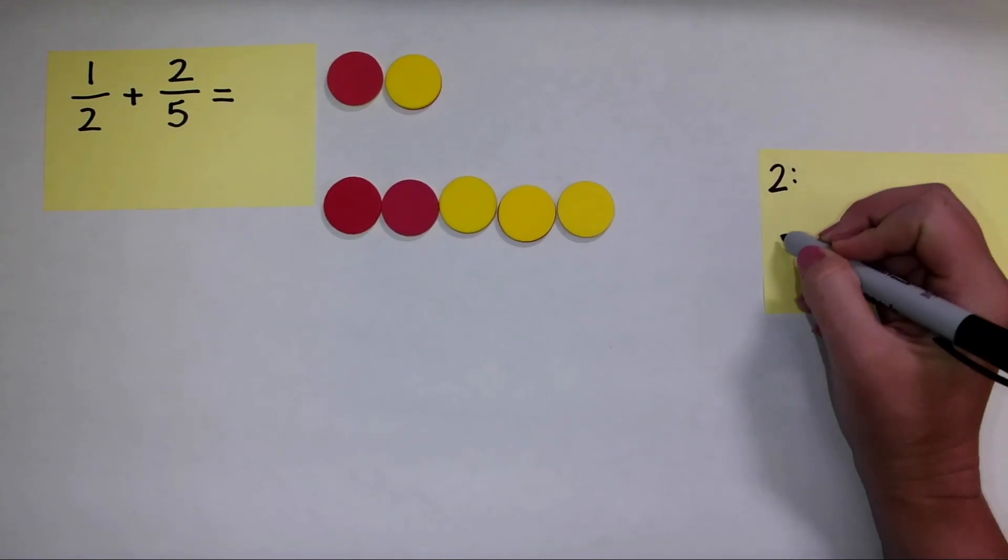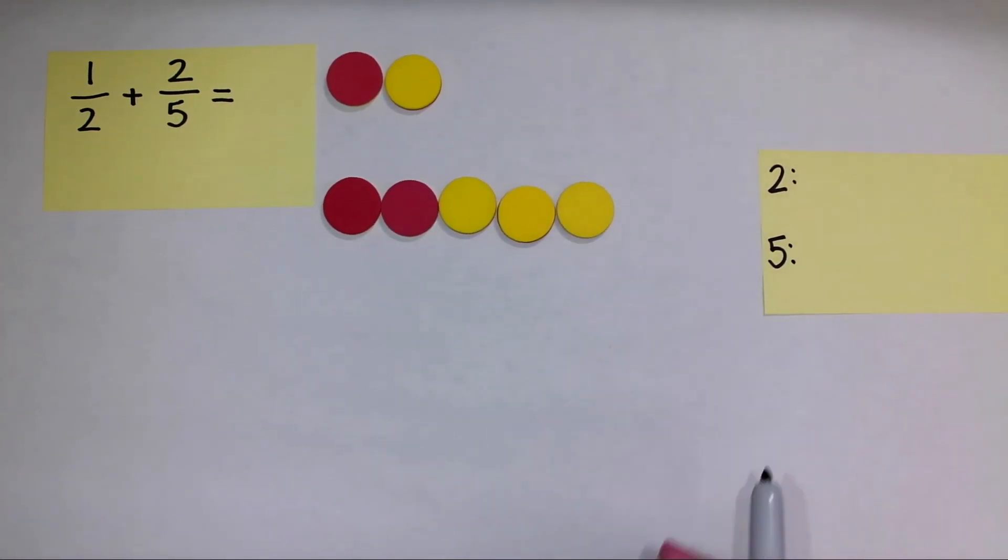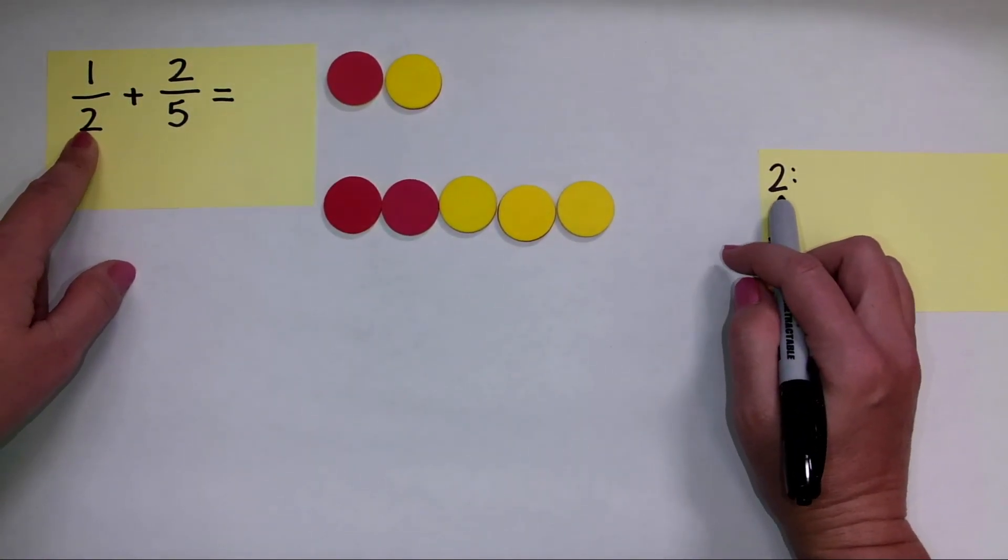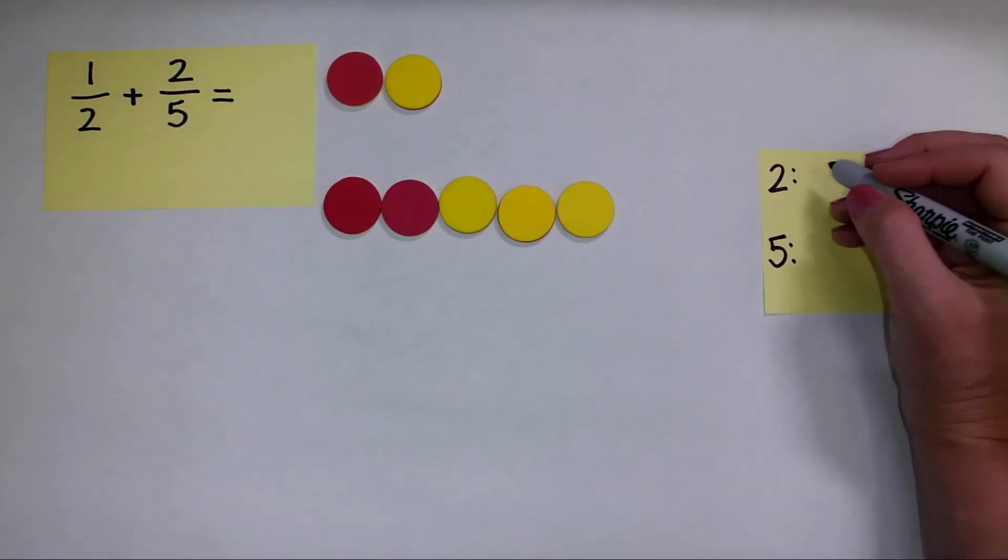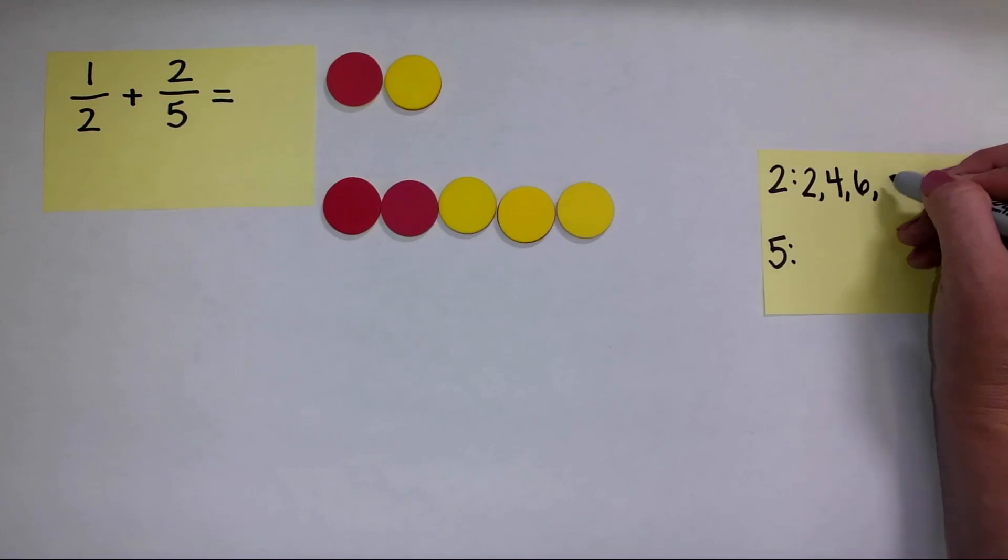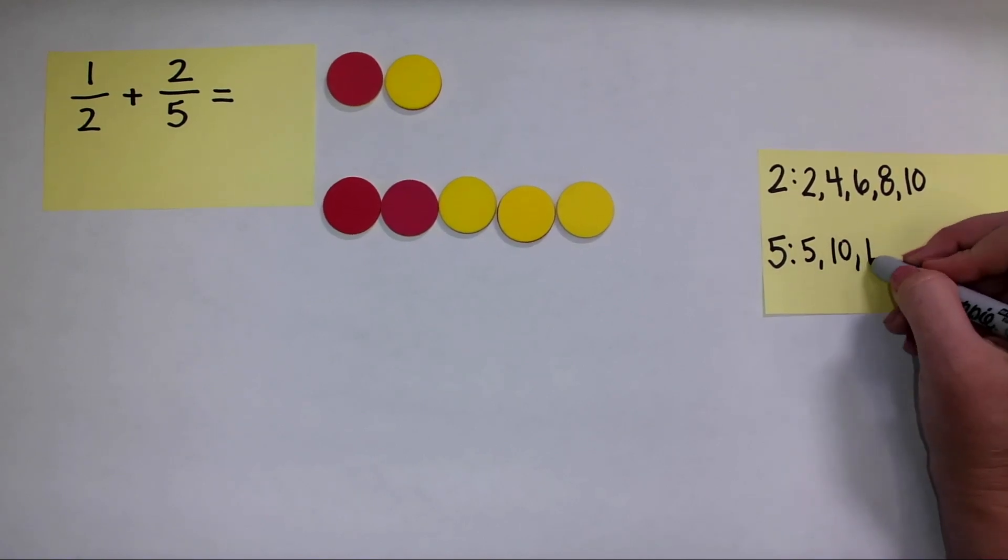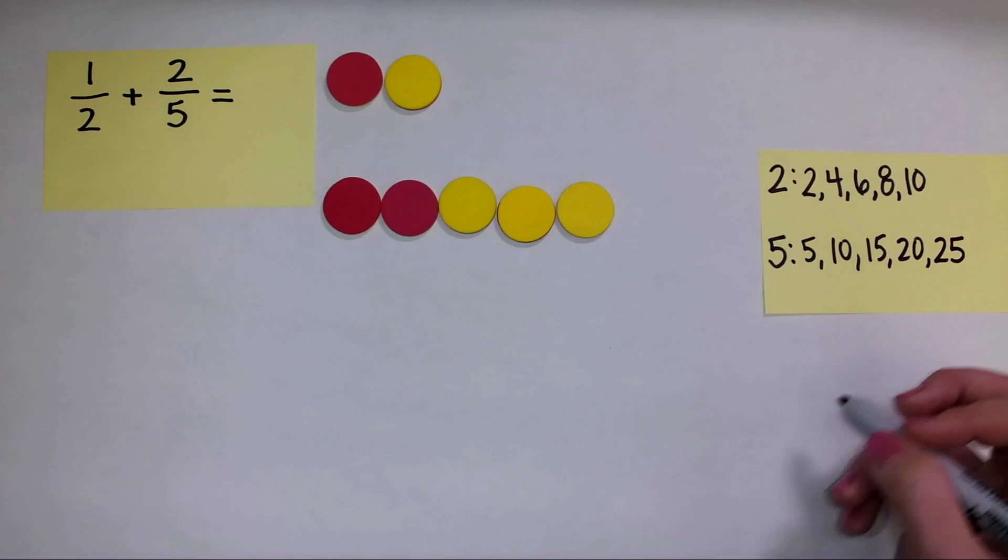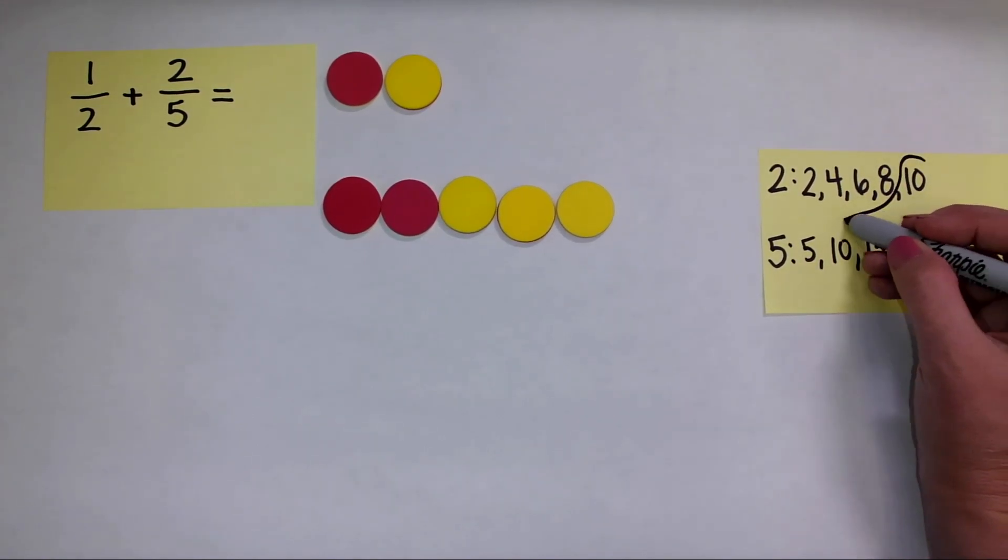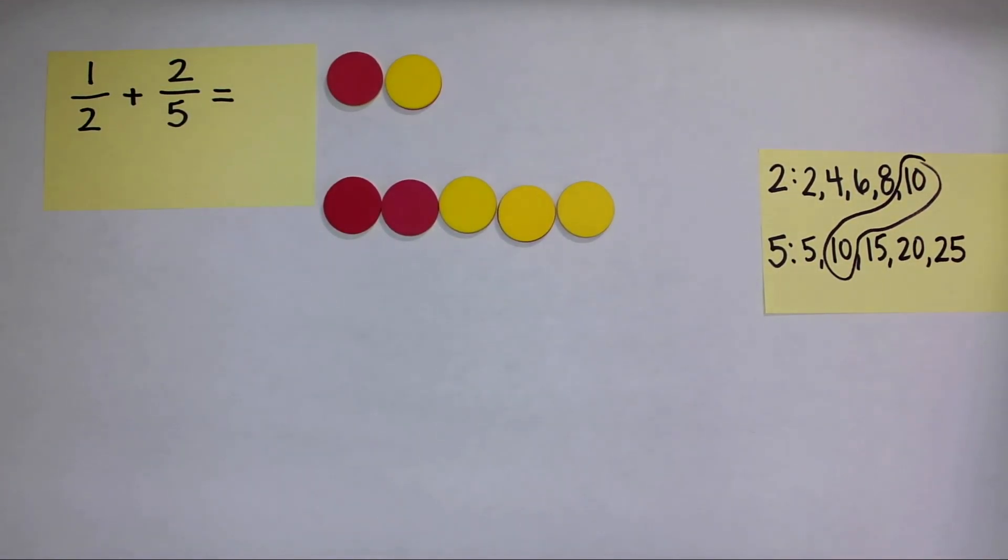So I'm going to do this by listing out my multiples for two and five, because I have a fraction with a denominator of two and a fraction with a denominator of five. And usually all we have to do is list out the first five multiples. So I'll get those written out here: five, ten, fifteen, twenty, and twenty-five. Now what is the least common multiple between these two is ten.